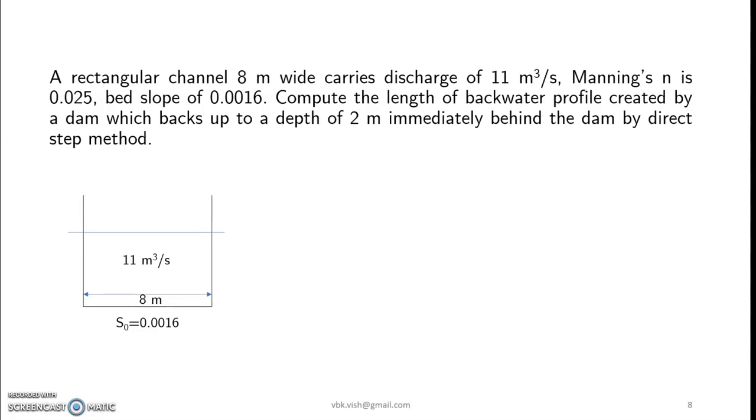The salient features related to the given problem statement is that it is a rectangular channel where the width of 8 meters is given and the discharge flowing is around 11 cubic meters per second. The other one is that this section is visualized immediately behind the dam where y is given as 2 meters. So this is what can be imagined in this particular case of a rectangular section.